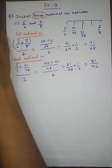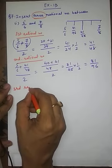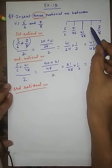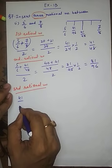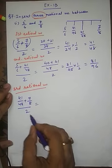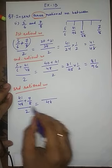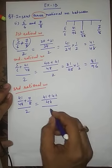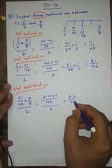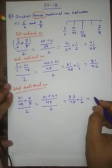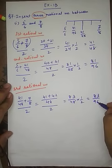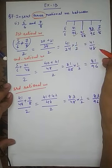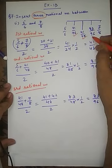The third rational number is found between 41 by 48 and 7 by 8. So we compute 41 by 48 plus 7 by 8, divided by 2. The LCM of 8 and 48 is 48. So 7 by 8 becomes 42 by 48. Adding 41 and 42 gives 83 by 48, and dividing by 2 gives 83 by 96. This cannot be simplified, so the third rational number is 83 by 96.